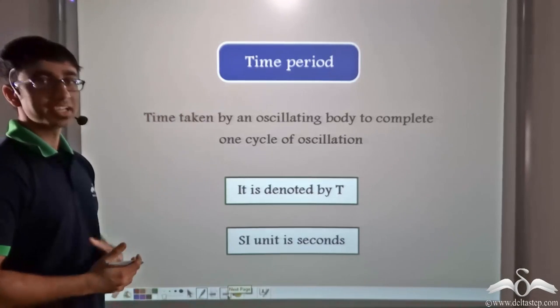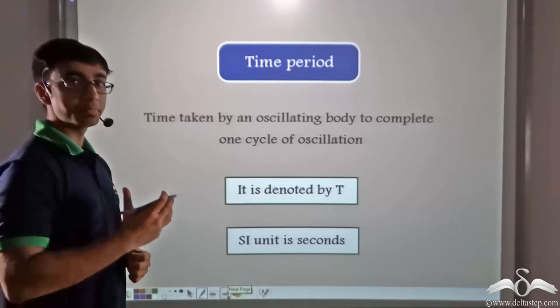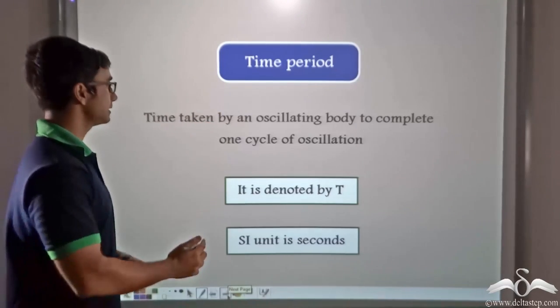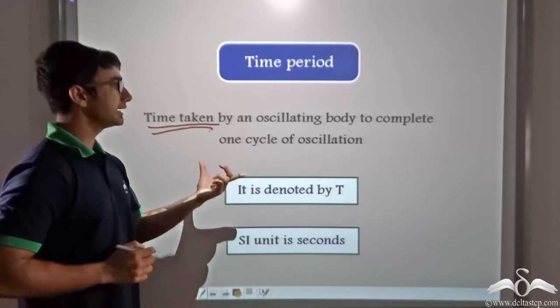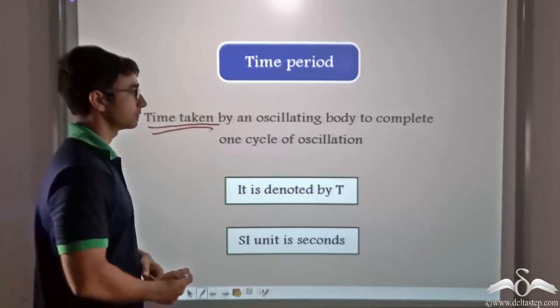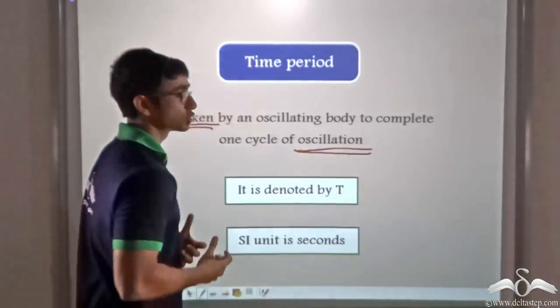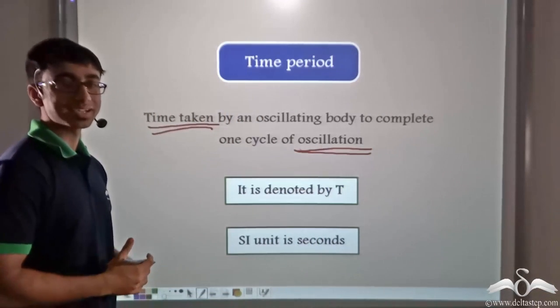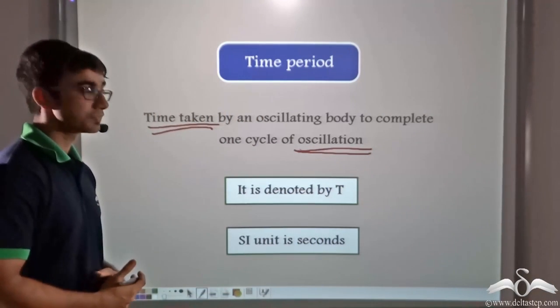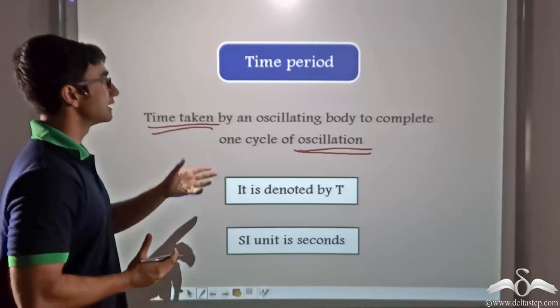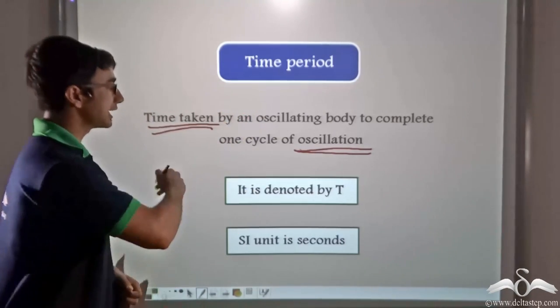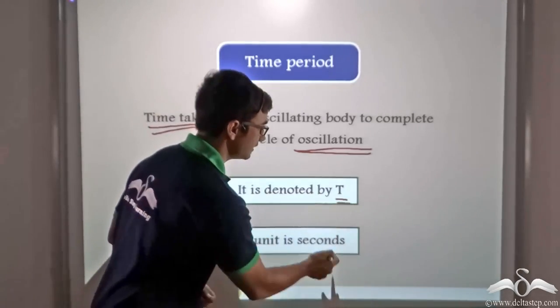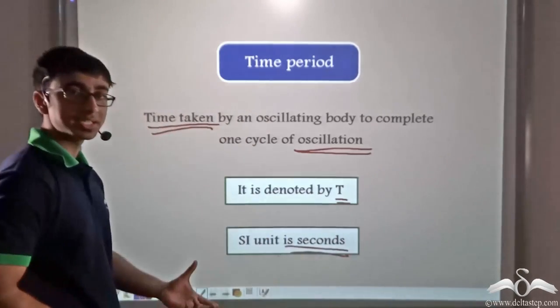It can be regulated if we consider the time period for a pendulum. Time period is nothing but time taken by an oscillating body to complete one cycle of oscillation. Let's say we have a pendulum which has a time period of one second. It would imply that it is completing one cycle in one second. Time period is usually denoted by T and the SI unit is seconds.